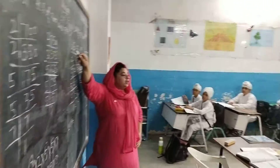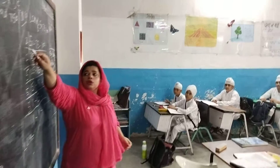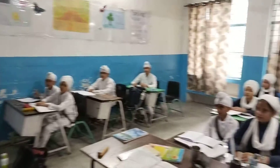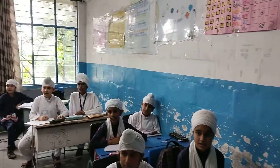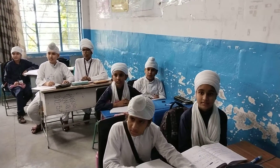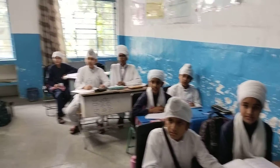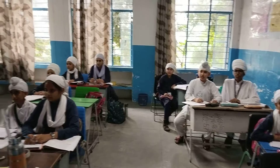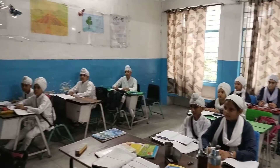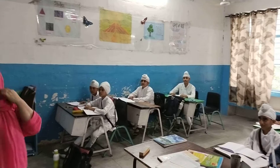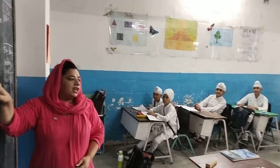We will start from 2. 2 25's are 50, 2 50's are 100. We will write 75 as it is. Then again, 50 is divisible by 2, so we will write here 2. 2 25's are 50. 25 and 75 as it is.